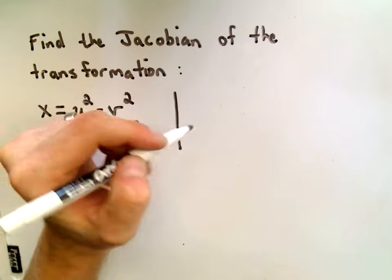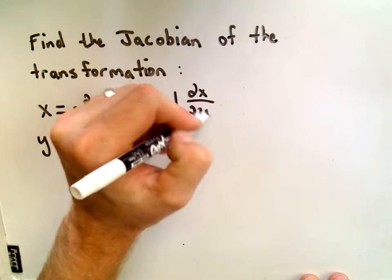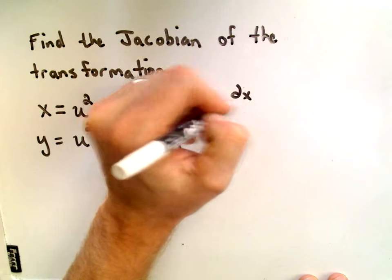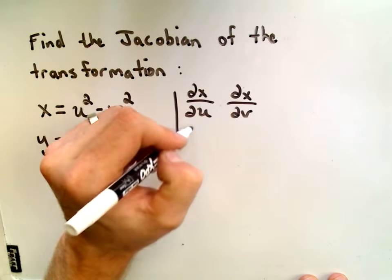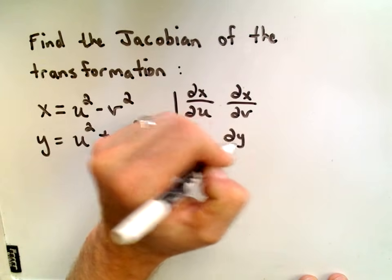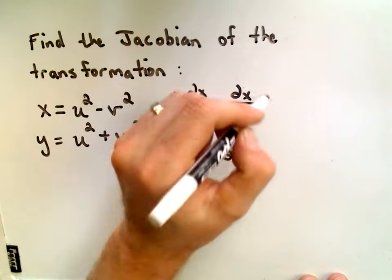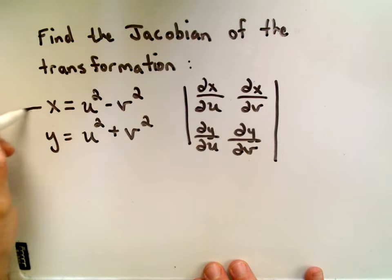Not the most complicated Jacobian in the world. So we have to find the partial of x with respect to u, the partial of x with respect to v, the partial of y with respect to u, and the partial of y with respect to v. I can compute that stuff relatively easily.